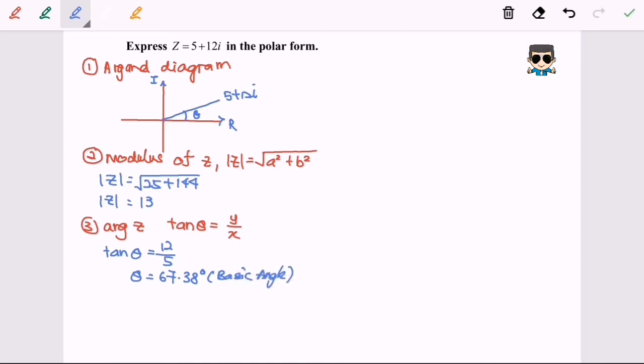So this is our theta, 67.38. So if it is in the mode radian, it will be 1.176 radian.